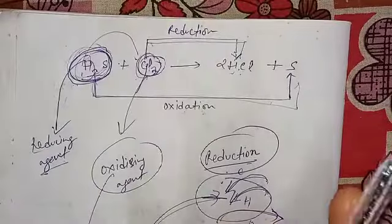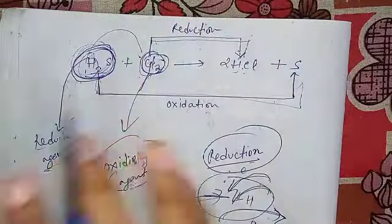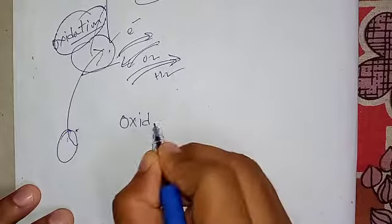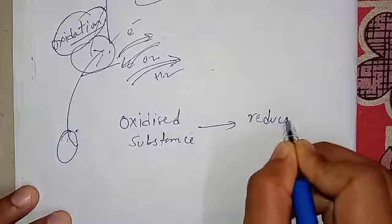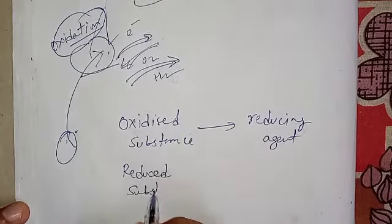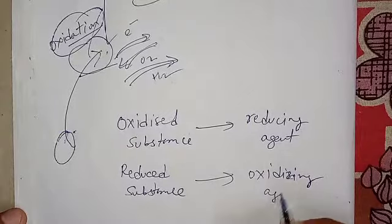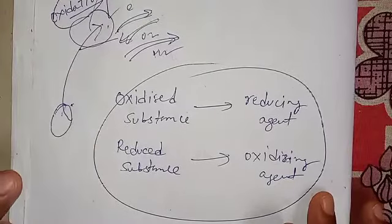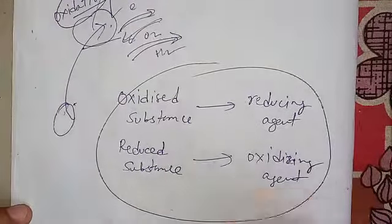The trick is: the substance which gets reduced is the oxidizing agent, and the substance which gets oxidized is the reducing agent. Just turn the table around and you will get the answer. The oxidized substance is the reducing agent, and the reduced substance is the oxidizing agent. I hope you understood. We will be learning other topics in the next video.